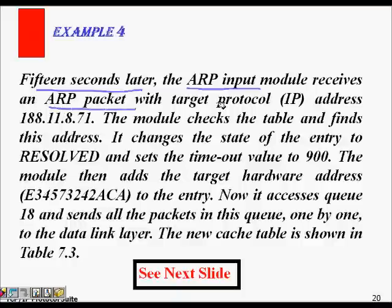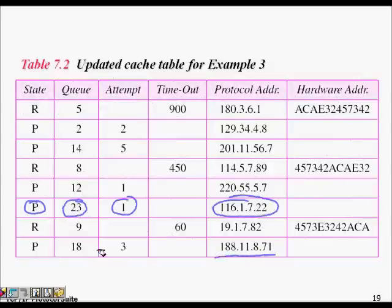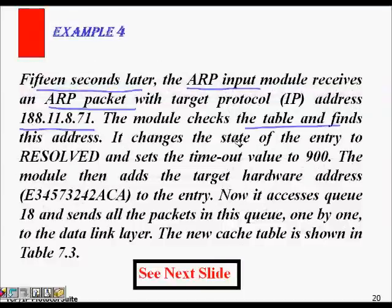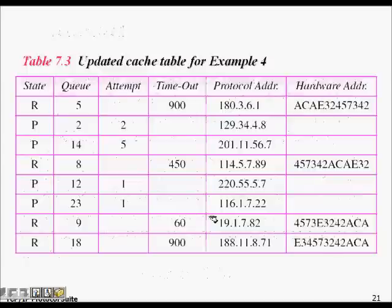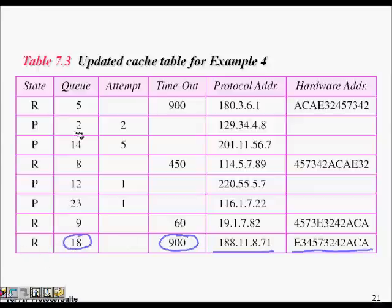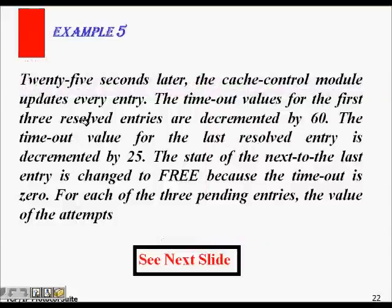Fifteen seconds later, the input module receives an ARP reply for IP address 188.11.8.71. The module checks the table, finds the pending entry, updates the state to resolved, records the MAC address obtained from the reply, sets a timeout of 900 seconds, and assigns it to queue 18. Packets waiting in that queue can now be forwarded since the MAC address is known.